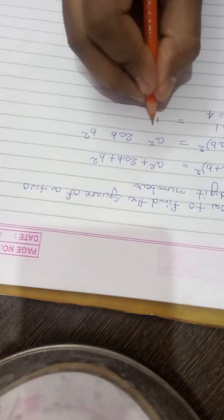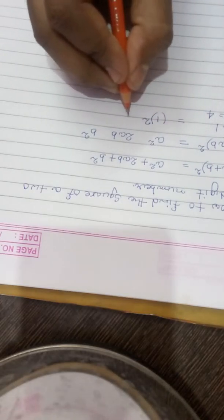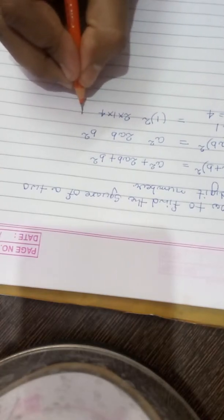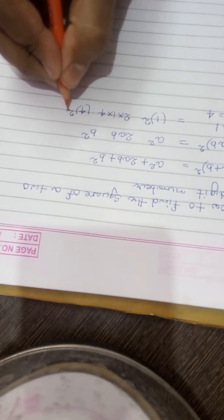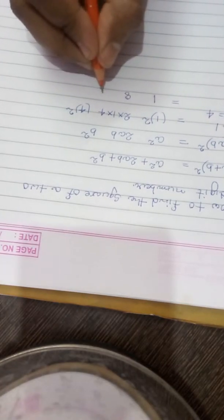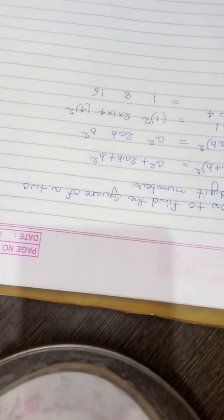So it will be 1², 2 into 1 into 4, and b² is 4. This is 1, this is 8, this is 16, right?